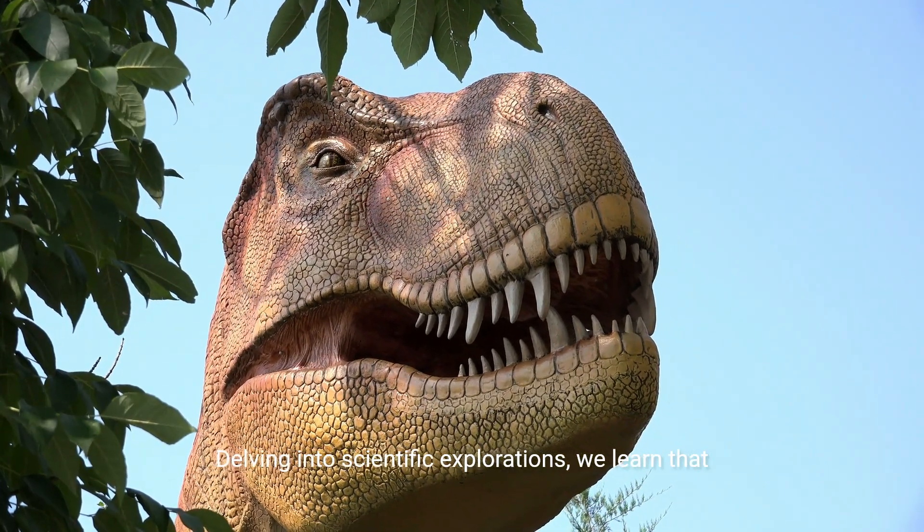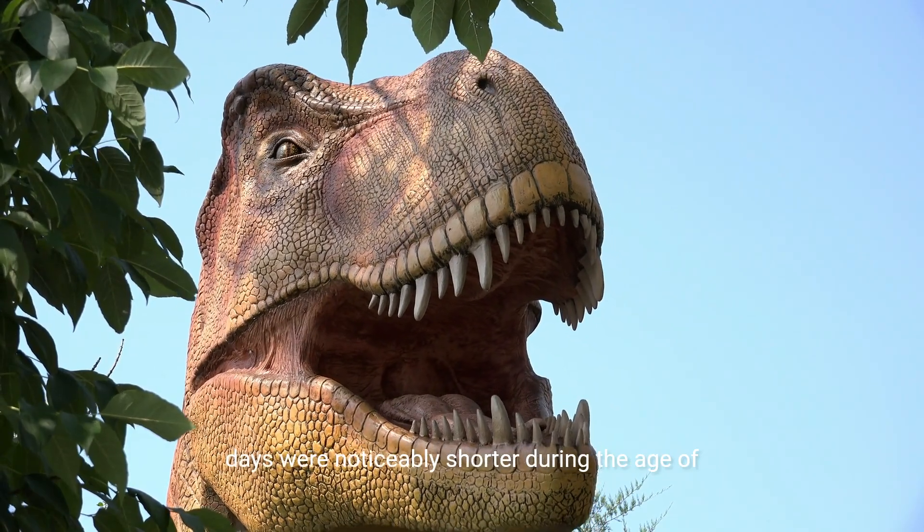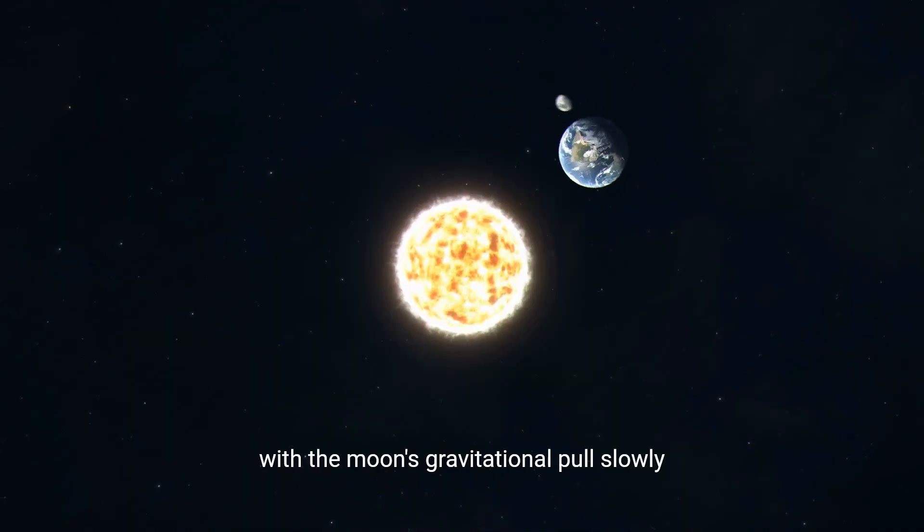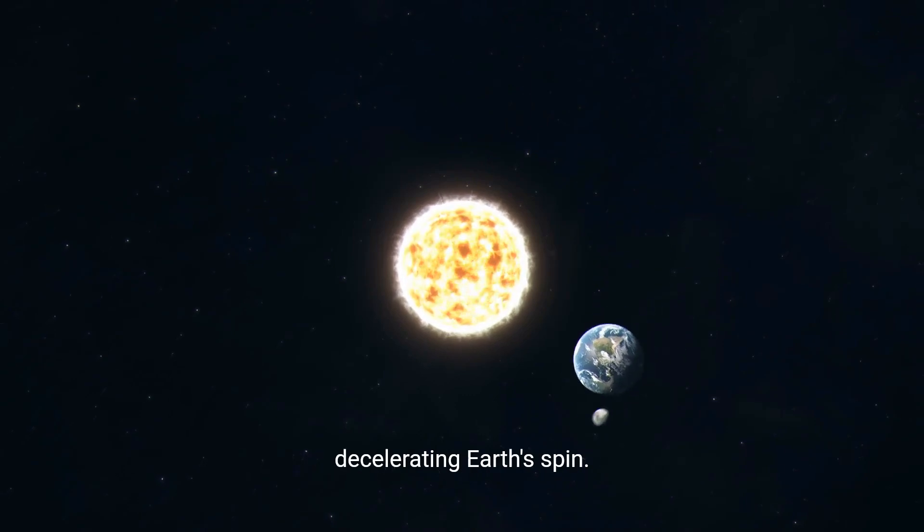Delving into scientific explorations, we learned that days were noticeably shorter during the age of dinosaurs, with the moon's gravitational pull slowly decelerating Earth's spin.